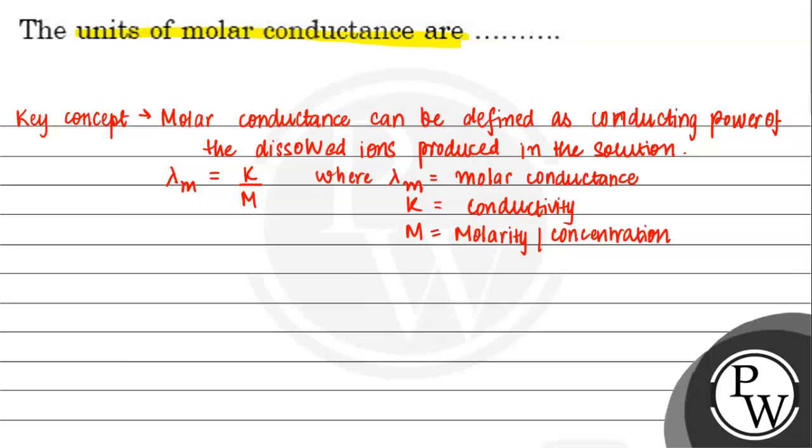Now, we are using the units of conductivity and molarity to find the units of molar conductance. We know units of conductivity is equal to siemens cm inverse, whereas units of molarity is equal to mol per liter.